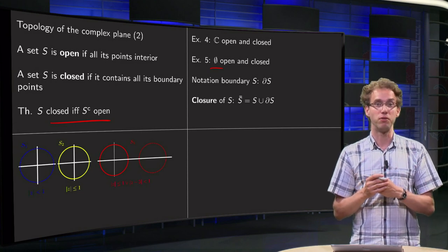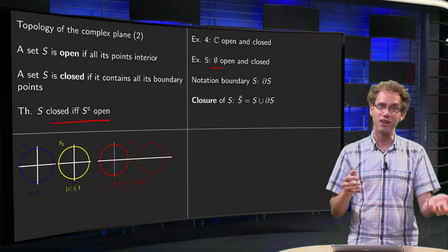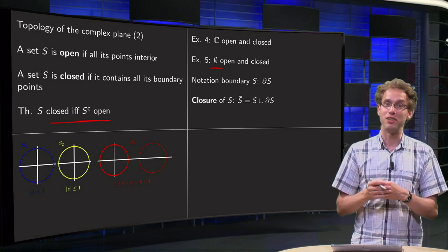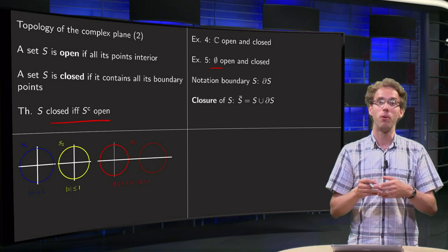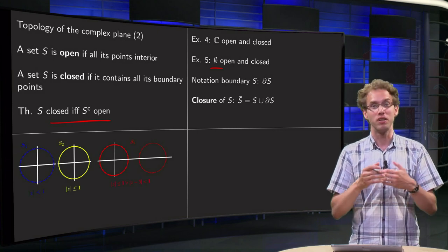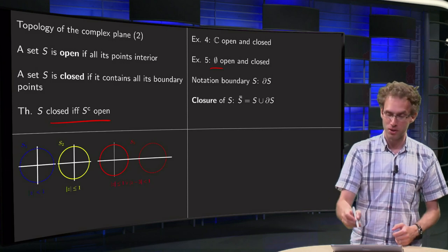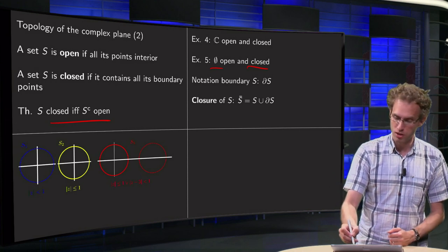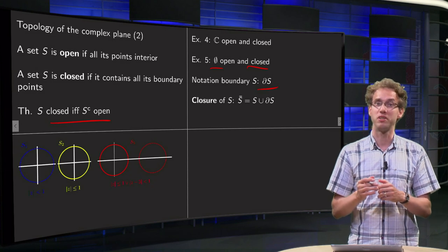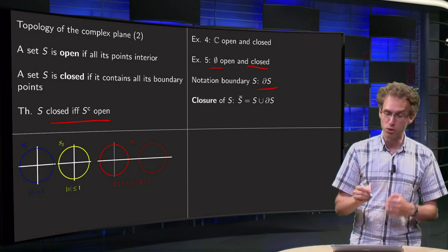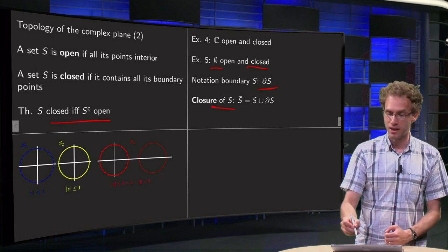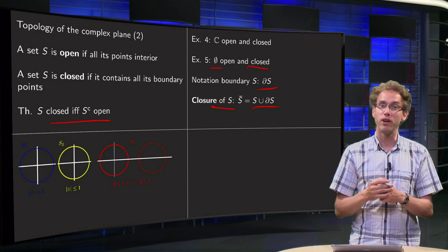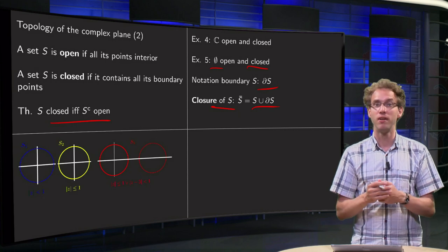For the empty set: all points have to be interior points — well there are no points, so in particular all points are interior points. And does it contain all its boundary points? Well it has no boundary points, so in particular all boundary points are included — so it is closed as well. Then some notation: the boundary of a set S is usually denoted with the delta symbol, δS. The closure of a set S is obtained by joining S together with its boundary. Notice in particular that if you already have a closed set, the closure of the set is the same as the set itself.